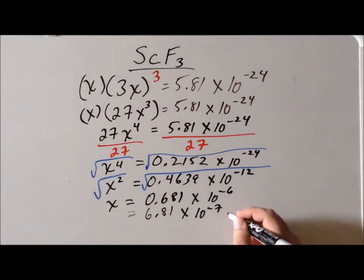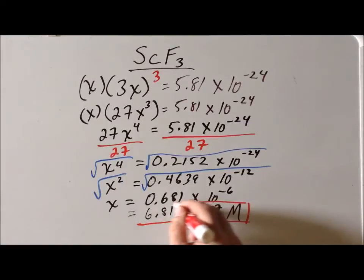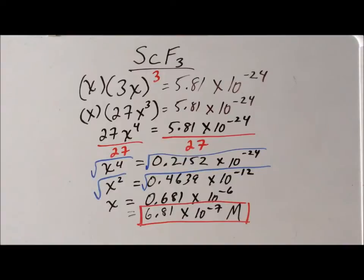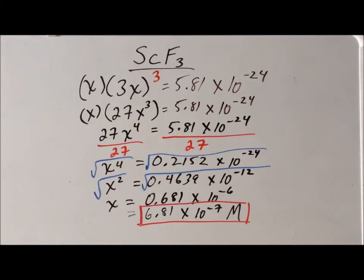So we're able to calculate the molar solubility of a saturated solution of scandium fluoride as 6.81 times 10 to the minus 7 molar. To recap: in writing the equilibrium constant expression, we end up with 3x inside the parentheses and also a 3 as an exponent, which when simplified gives 27x³. And in solving for x, since we need a fourth root, we can do that iteratively by taking the square root of the square root.